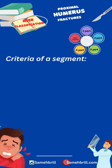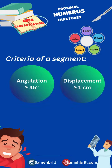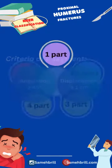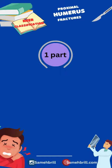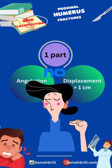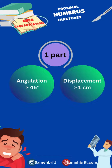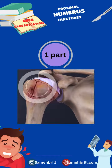In order to say there is a displaced fragment, this fragment must be at least angulated 45 degrees or displaced more than one centimeter. So one-part fractures are minimally displaced, in which no segment has been angulated more than 45 degrees or displaced more than one centimeter. Remember, no matter how many fracture lines are present, if they don't meet the criteria, they are considered a one-part fracture.